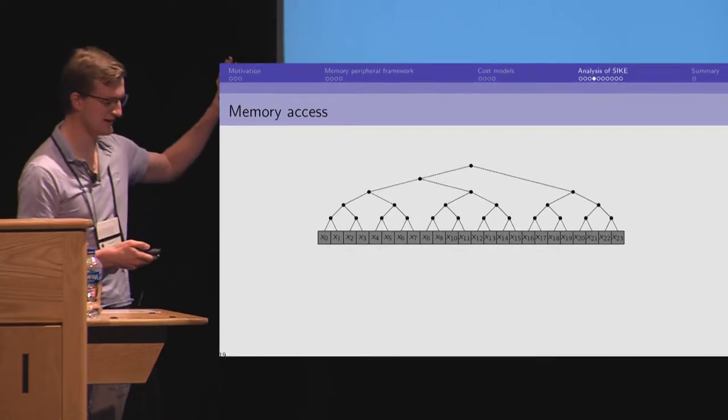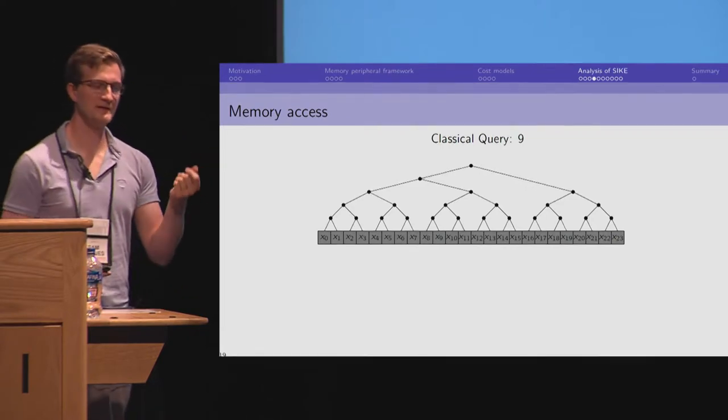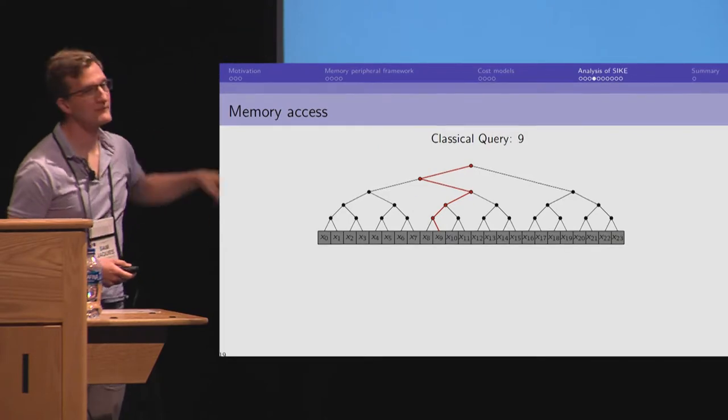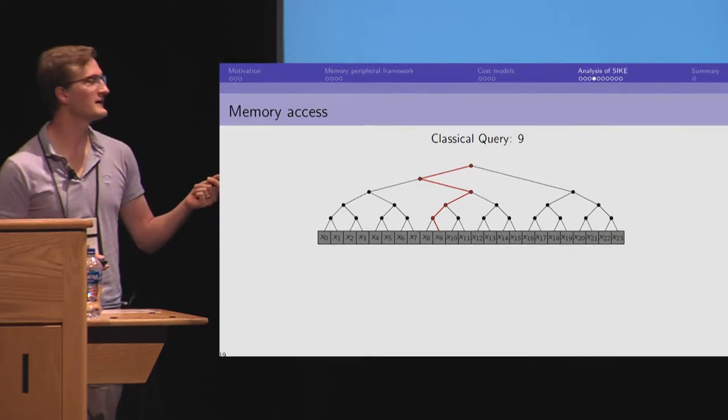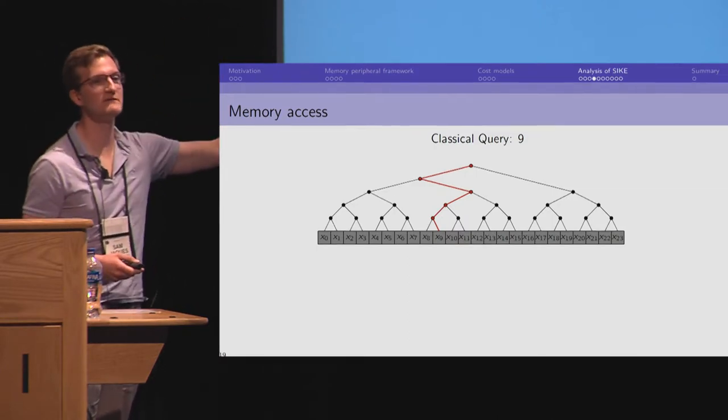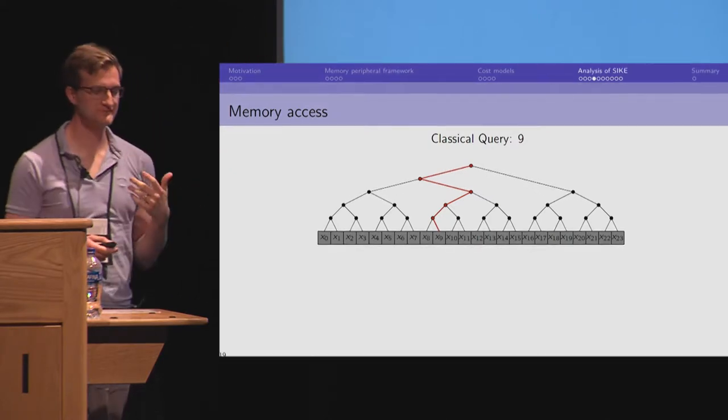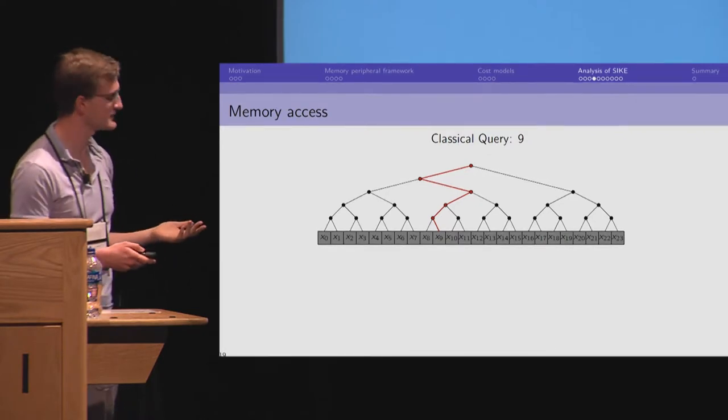So, we have a classical query. We want the ninth element of memory. We can follow this red path. And at each point, the memory controller can look at the input and say, I only need to take the left path. I don't need to go to the right. I don't need to use any of those gates. I don't need to turn on any of those memory addresses. And so on. And only needs to spend log n gates to accomplish this task.